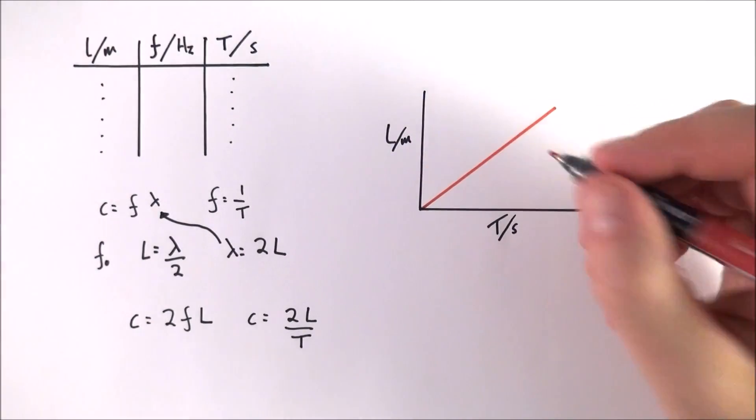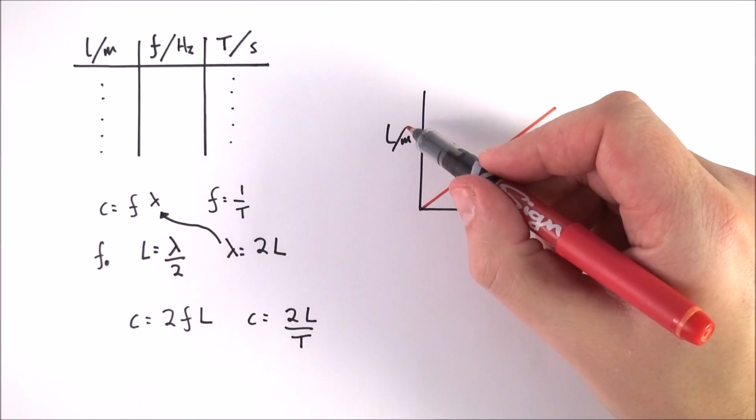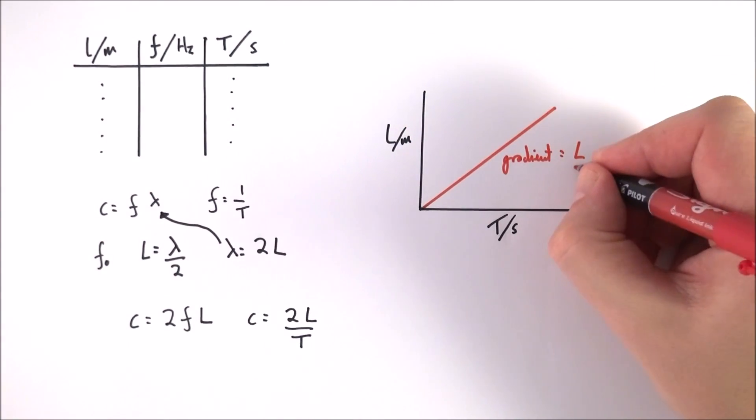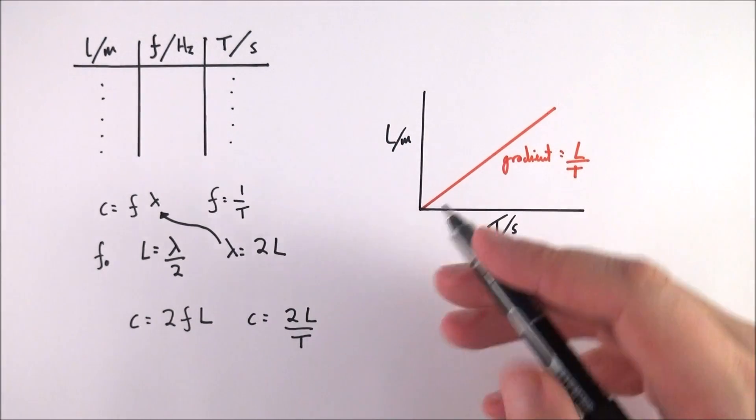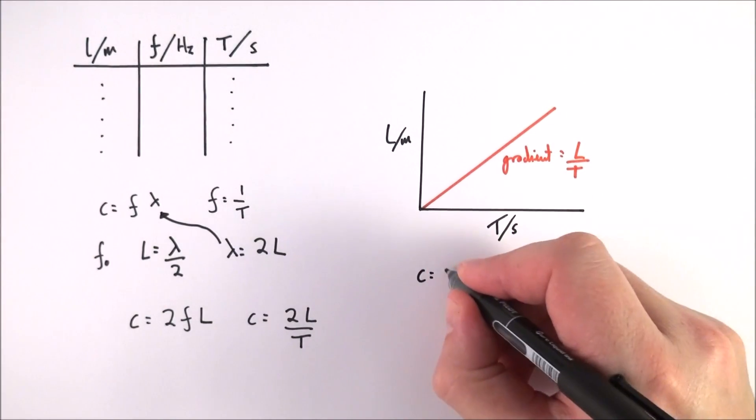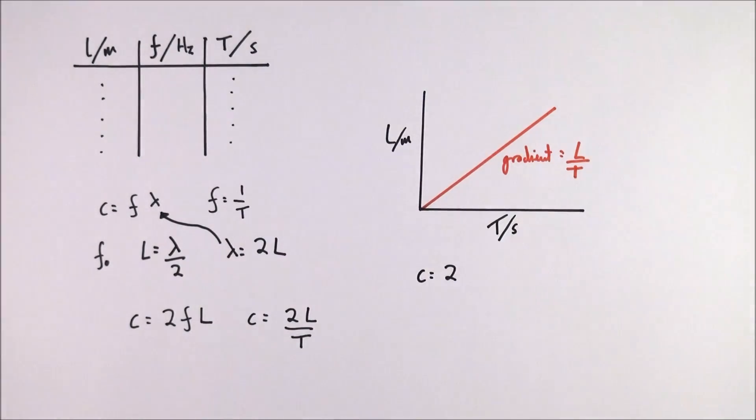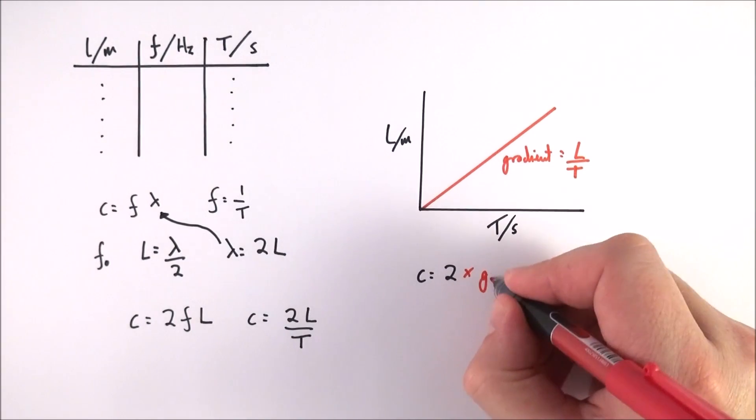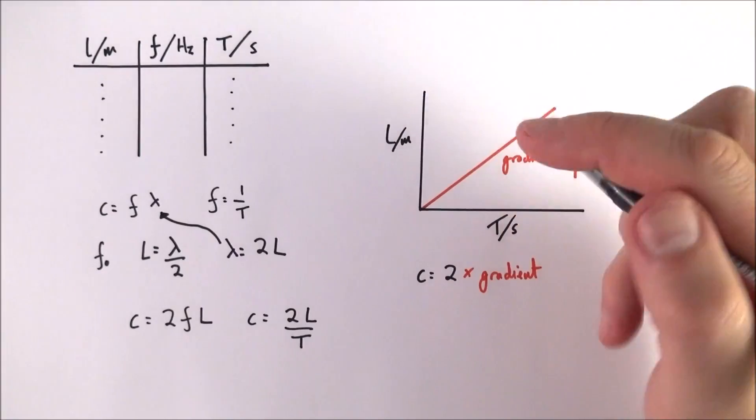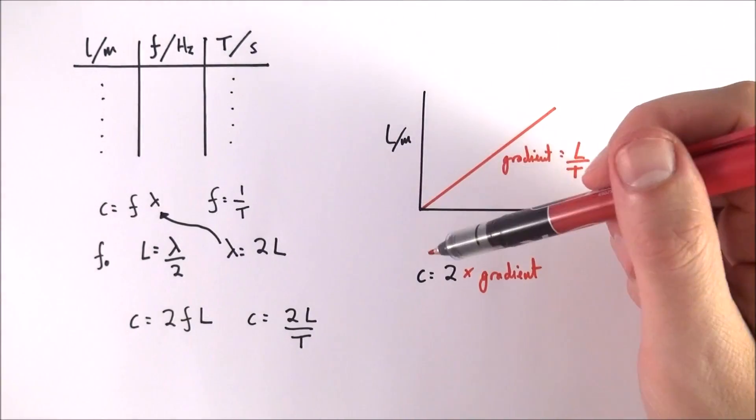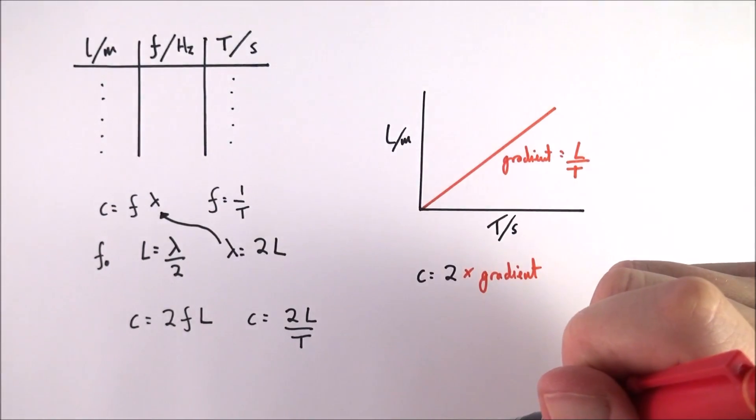You can then calculate the gradient. If you think about this equation, we know that the wave speed is equal to two times L over T, so that means c is going to be equal to two times your gradient. That should give you the value or one value for the wave speed along that string.